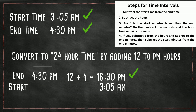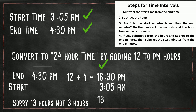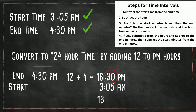Now we have an end time of 16:30 and a start time of 3:05, and we'll follow the same steps. Step one: subtract the hours — 16 minus 3 is 13 hours. Now ask yourself: is the start minutes larger than the end minutes? In this case, 5 is not larger than 30. So now we just subtract the minutes — 30 minus 5 is 25. So the time interval between 3:05 a.m. and 4:30 p.m. is 13 hours and 25 minutes.